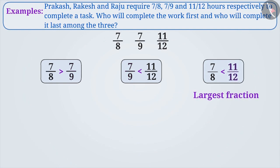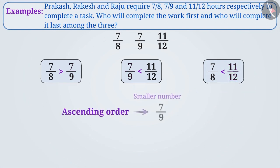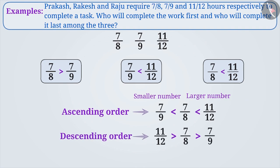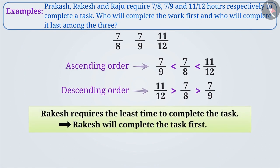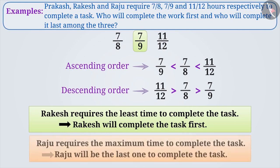Now we will arrange the numbers from smallest to largest to get the numbers in ascending order. By reversing it from the largest to the smallest, we put the numbers in descending order. Therefore, Rakesh requires the least time to complete the task, which means he will complete the task first. And because Raju requires the maximum time to complete the task, he will be the last one to complete it.